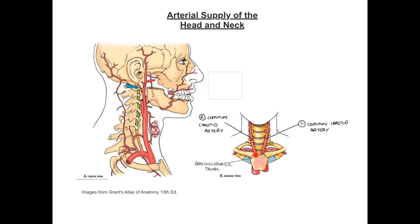From the brachiocephalic trunk, we see it terminate by dividing into the subclavian artery, which will go on to supply the upper limb, and the right common carotid artery, which will run up the length of the neck. The left and right common carotid arteries will ascend up through the neck within a structure known as the carotid sheath.